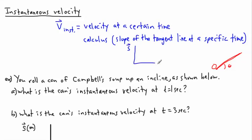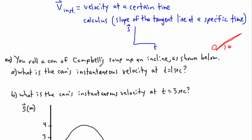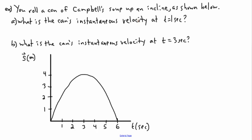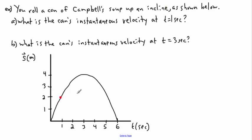In calculus terms, instantaneous velocity is the slope — or gradient — of the tangent line at a specific time. This only works if you have a graph of displacement versus time. So for the instantaneous velocity at t = 1 second, I mark a point at t = 1 second, and I need to find the slope of the tangent line at that point.